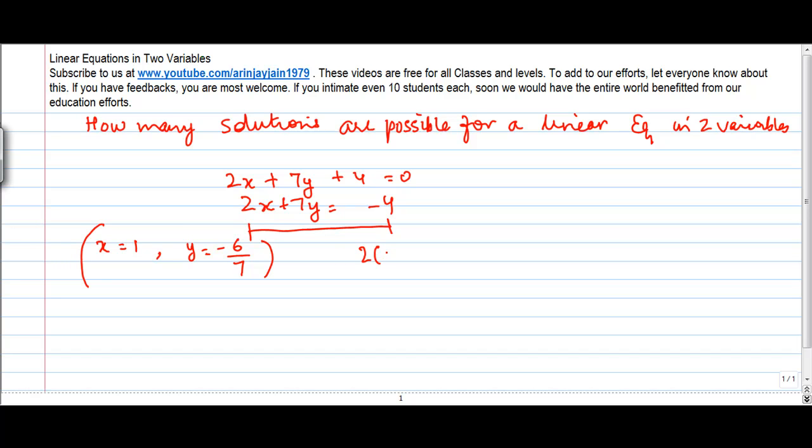So, this equation will look like 2 into 1 plus 7 into minus 6 divided by 7, or 2 minus 6 is equal to minus 4. Therefore, this equation is satisfied by the value of x is equal to 1 and y is equal to minus 6 upon 7.